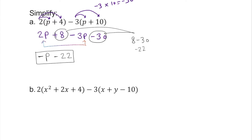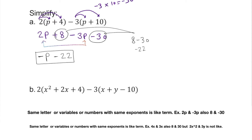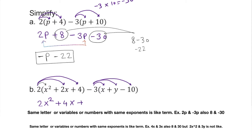Let's take a look at the next one. We're going to distribute the trinomial all the way, and there's another set of parentheses, so we distribute all the way. So 2 times x squared is 2x squared, plus 2 times 4x is 4x, plus 2 times 4 is 8, minus — the first term is 1, so we multiply through and bring it down: 3x, then negative 3 times 1 is negative 3y, and negative times negative is positive 30.